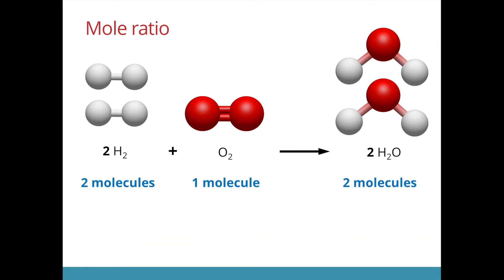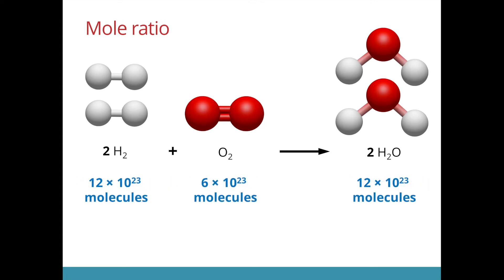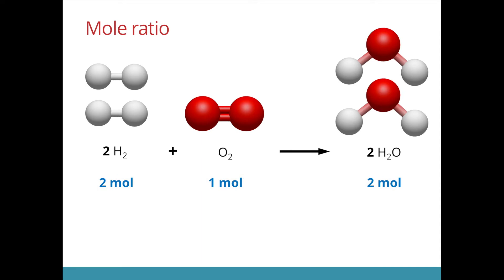The numbers in front represent the number of molecules that enter the reaction and react. If I were to increase the number, the ratio will always remain the same. We can see from the reaction that 2 moles of hydrogen react with 1 mole of oxygen to produce 2 moles of water. This is called the mole ratio.